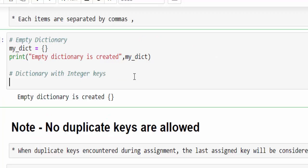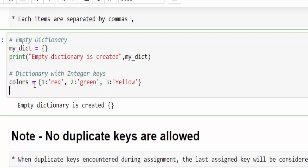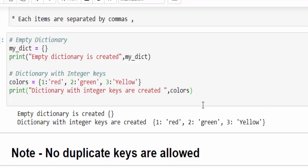The next example: how to create a dictionary with integer keys. For that, variable name colors equals within the curly braces we provide values in key-value mechanism. For example, 1 is the key, colon, within quotes red. The 1 key will have the value red. Similarly, comma, adding next key 2 colon green, same way 3 colon yellow. So we've created a dictionary with integer keys, and each integer key will have its own value. We execute, and this is how the output is created.